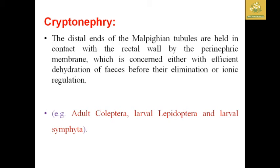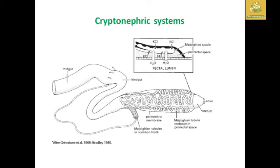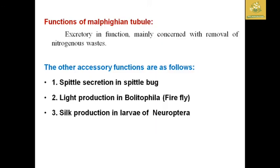Next is the cryptonephric system — the distal ends of the Malpighian tubules are held in contact with the rectal wall by a perinephric membrane. This system is concerned with efficient dehydration of species and the elimination and absorption of ionic regulations. It is mainly found in adult Coleoptera, larval Lepidoptera, and larval Diptera. The structure shows Malpighian tubules in a common trunk, along with the rectum, and the Malpighian tubules enclosed within the perinephric space.